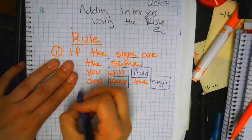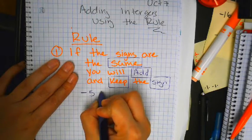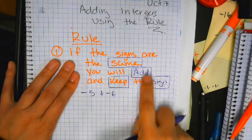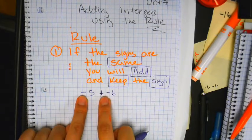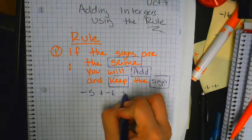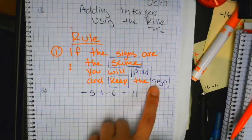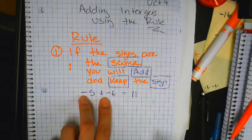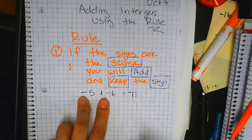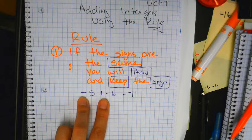For example, if I have negative 5 plus negative 6 — check the signs. These are the signs. You see how they're both negative? So if they're both negative, you're going to add. What do you get? 11. And then you keep the sign. My sign is negative, so you keep it. You're writing this down, right? All of it.